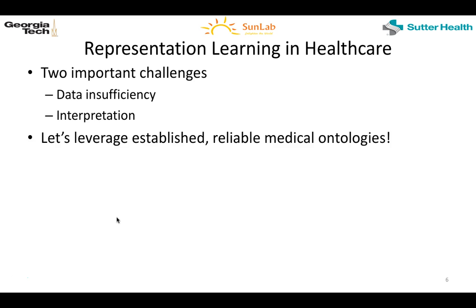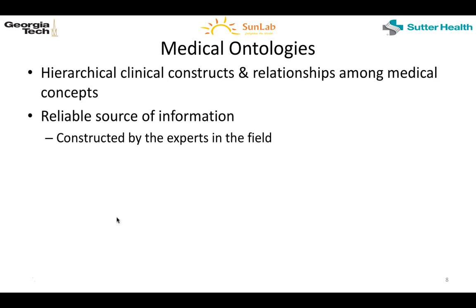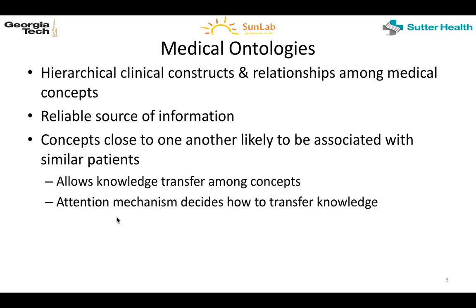We claim in the paper that we can leverage established reliable medical ontologies. Medical ontologies are hierarchical clinical constructs and relationships among medical concepts, and they can be represented as directed acyclic graphs. Examples are ICD, CCS, or SNOMED-CT. They are reliable because they are constructed by clinical experts. We focus on medical ontology because when concepts are close to one another — such as sibling concepts or child-parent relationships — we can transfer knowledge gained from one node to the other, and how we transfer knowledge is where we turn to the attention mechanism.